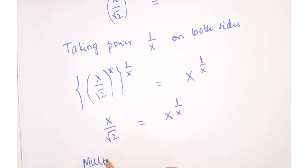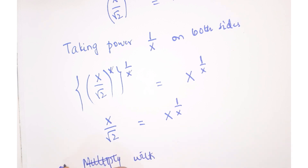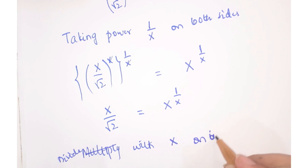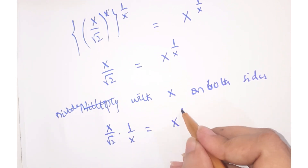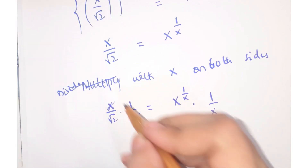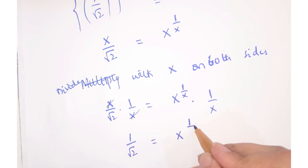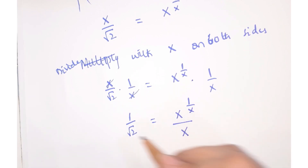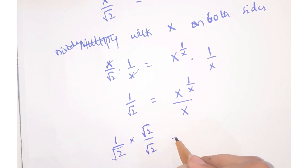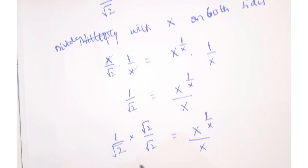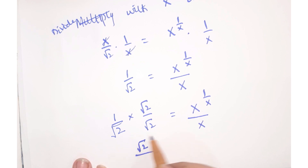Now we are going to divide both sides by x. So 1 upon under root 2 is equal to x to the power 1 upon x into 1 upon x. This and this gets cancelled, so we have 1 upon under root 2 equal to x to the power 1 upon x upon x. Now this is 1 upon under root 2, so we are going to rationalize it by multiplying and dividing by under root 2. So we get under root 2 upon 2 is equal to x to the power 1 upon x upon x.